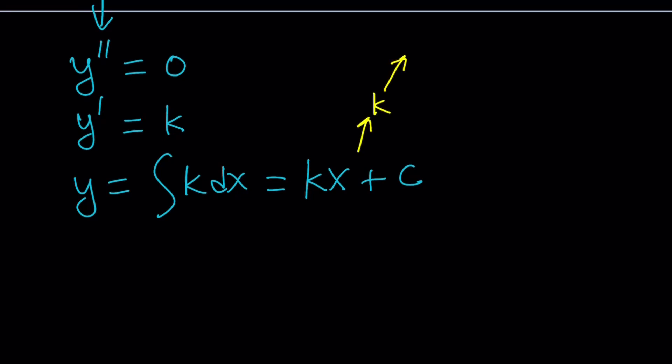differentiate it once, you're going to get k. Differentiate it one more time, you're going to get zero. That's going to get you to y double prime. Make sense? So you can always check your work with integration. That's what's really cool about it. Integration is harder than differentiation because the rules don't always apply. And you have to put it in a certain